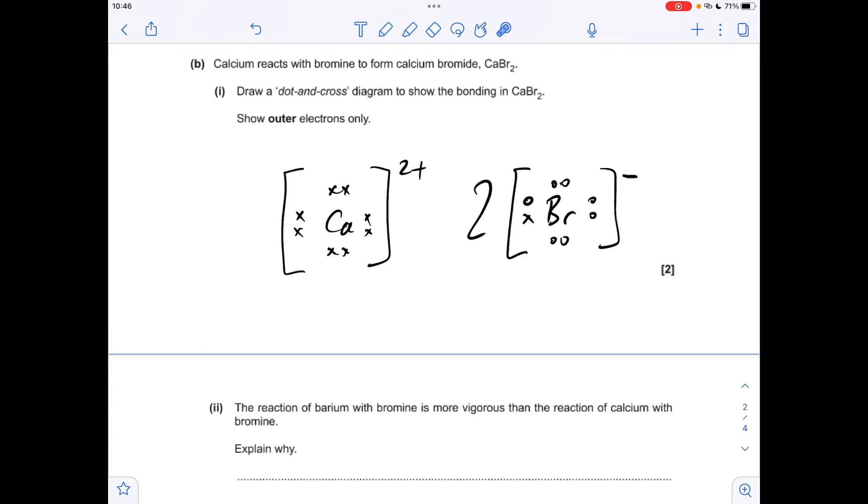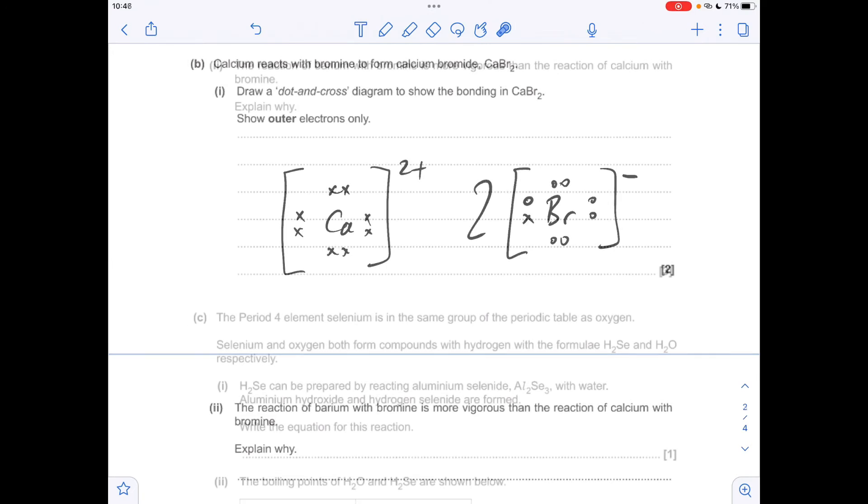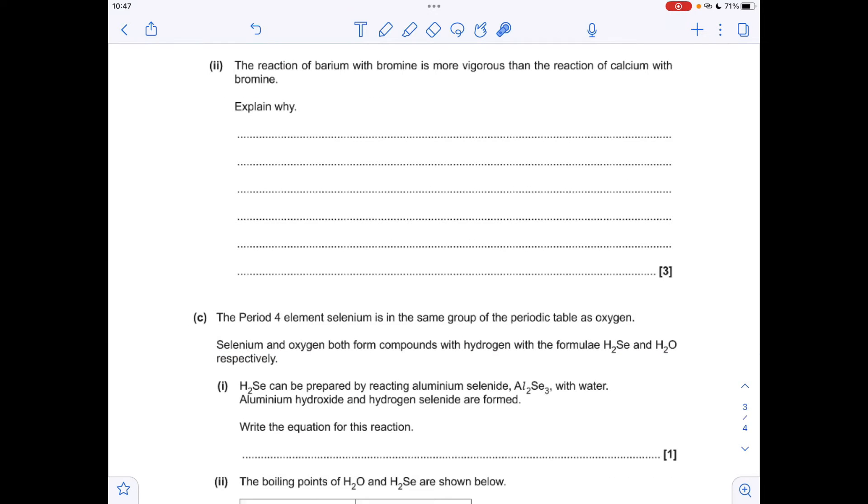Moving on to the next part, we've got to explain the difference in reactivity of these two metals with bromine. It's all down to the relative positions in group 2. Barium's lower down in the group so it's going to have a bigger atomic radius, it's going to have more shielding, it's going to have lower first and second ionization energies. So it's going to have a weaker nuclear attraction for its valence electrons so it can lose two electrons much more easily than the calcium can.